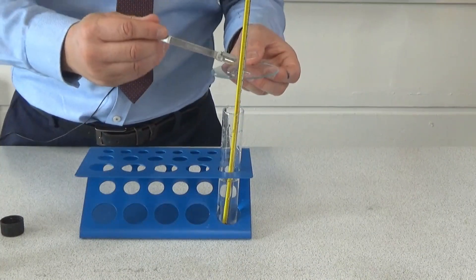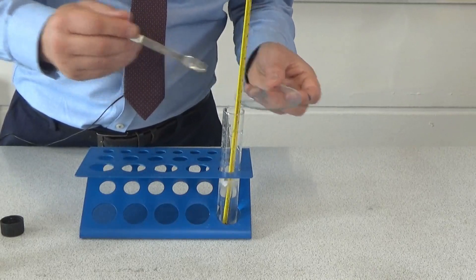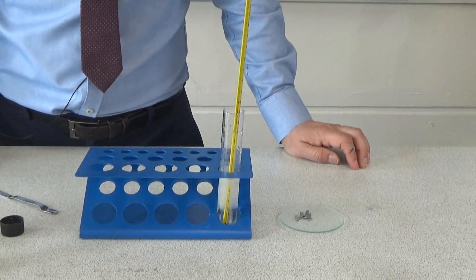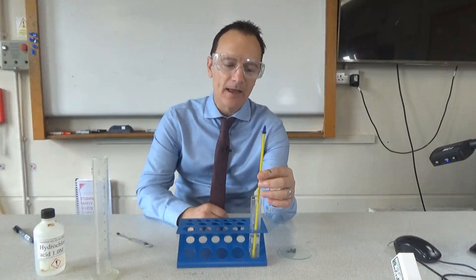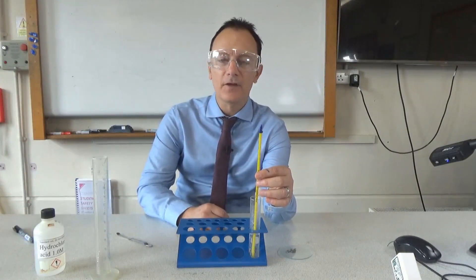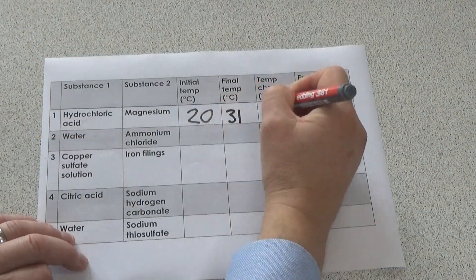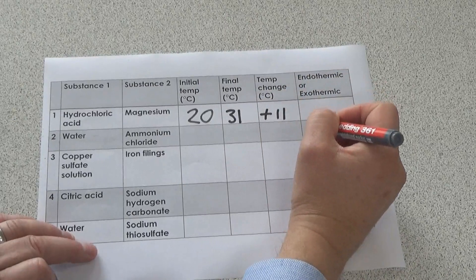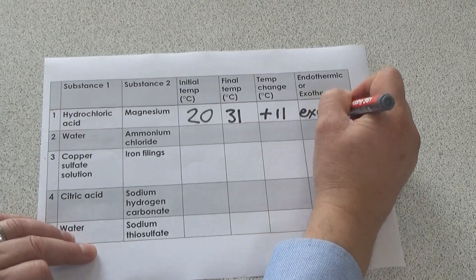I then add the magnesium to the hydrochloric acid — I'm adding four pieces, each between one and two centimeters long. I give it time to react and watch the thermometer to see the highest or lowest temperature it records. The temperature has now stopped increasing, and I write down the final temperature of 31 degrees C. The temperature went up to 31 degrees — an increase of 11 degrees — so I write plus 11. This means it's been giving out heat energy to the surroundings: an exothermic reaction.